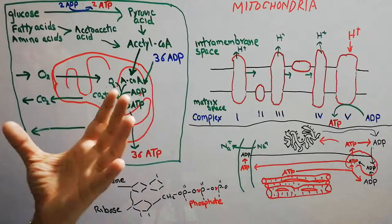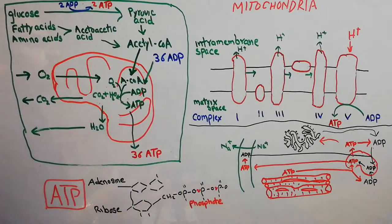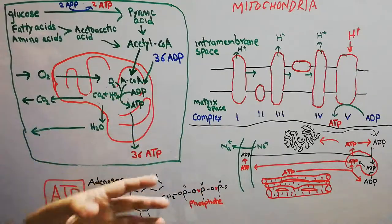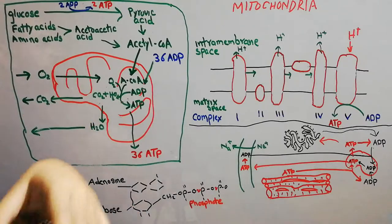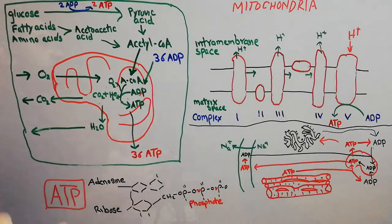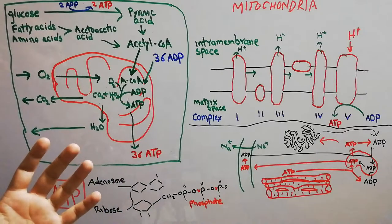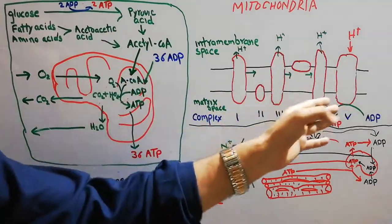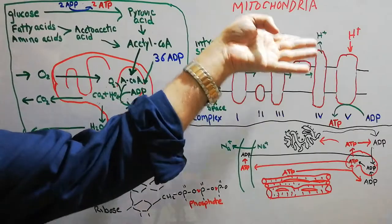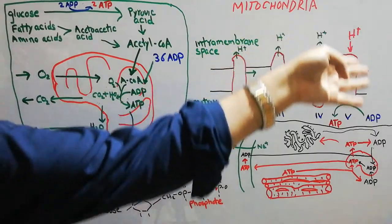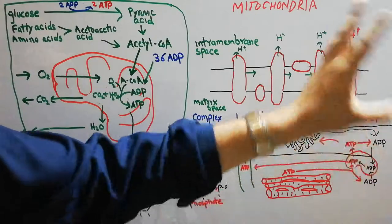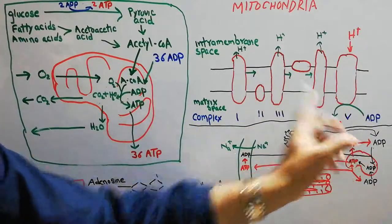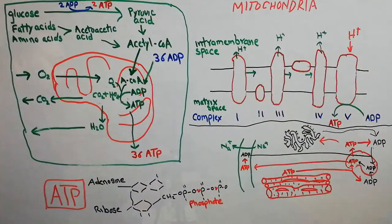This is just like a water dam: a lot of water is stored, and when it flows out with pressure it moves a turbine and generates electricity. Similarly here, hydrogen ions are thrown out and come back through one complex with speed, releasing energy that is stored in the form of ATP.